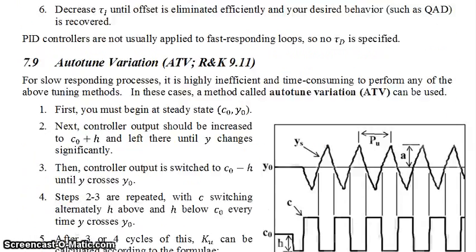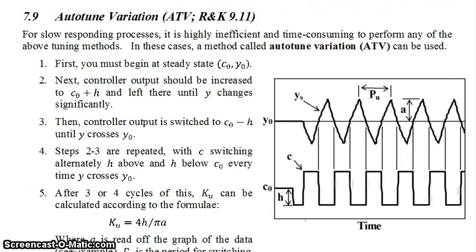Now the next method of tuning is called auto-tune variation. This is the case in which you have a system which is slow responding. If it's slow responding, then you really can't do these kinds of trial and error methods in any appreciable amount of time. It's highly inefficient and time-consuming, so you will use this auto-tune variation method, which actually can be very fast.